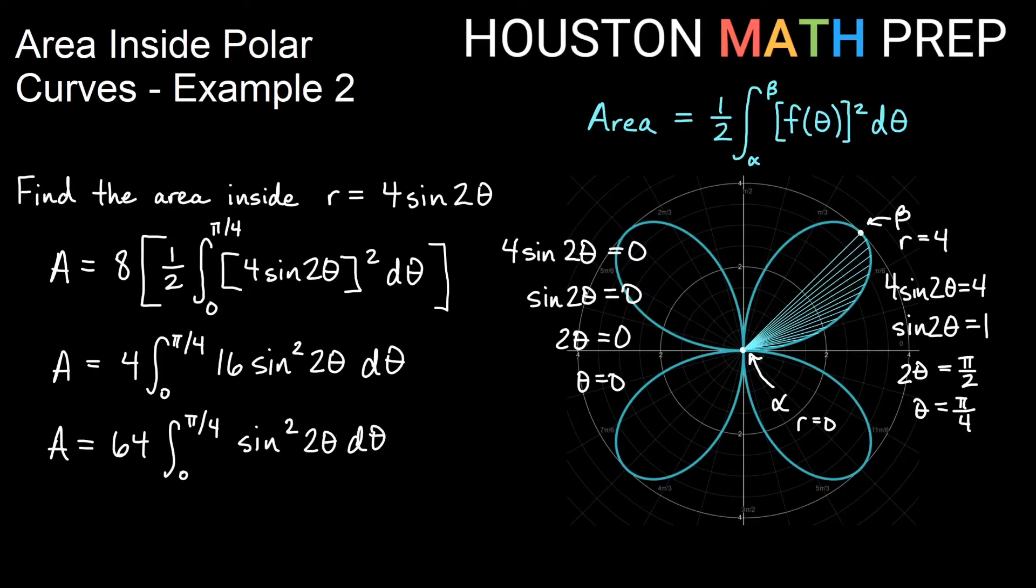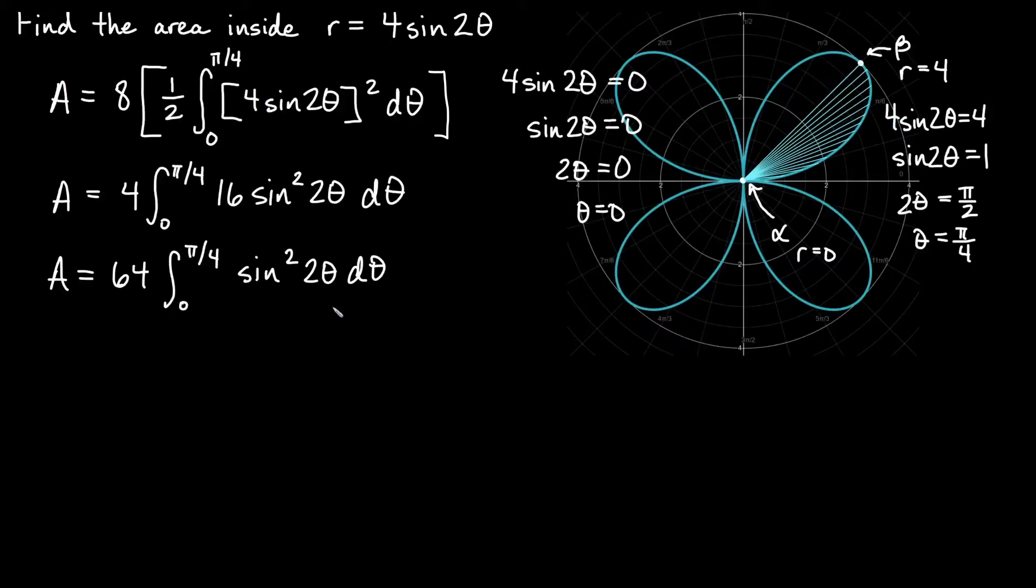Then sine squared 2 theta would be the only thing left in there, d theta. Now this is an even power of sine and cosine. This is going to be pretty typical using these double angle formulas or identities because we're going to be squaring r, squaring our function of theta often. So it's very likely you'll end up with sine squared or cosine squared inside your integral. The double angle formula for sine is going to be 1 minus cosine of double the angle. We already have 2 theta, so double that angle is actually 4 theta, over 2, d theta.